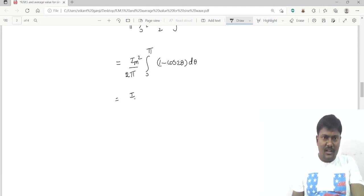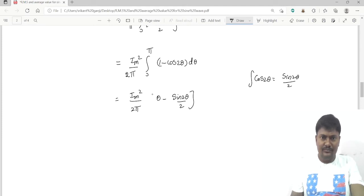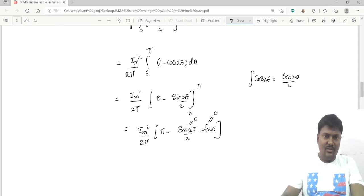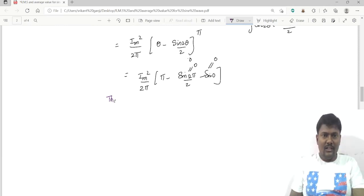I_m square divided by 2π, integration of 1 d theta is theta, minus integration of cos 2 theta is sine 2 theta by 2. The limits are 0 to π. If you substitute upper limit, this value is π. Sine 2π by 2 minus sine 0, this value is 0. Sine 2π is 0, sine 0 is also 0.